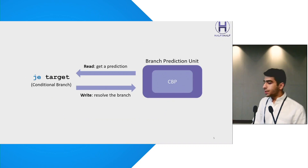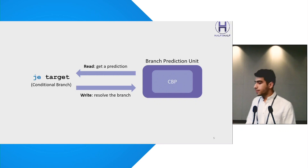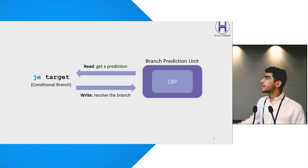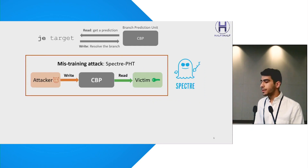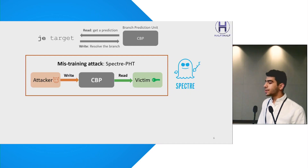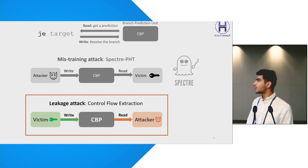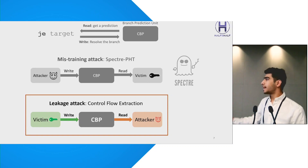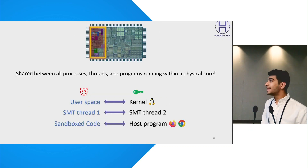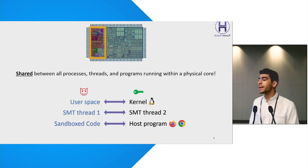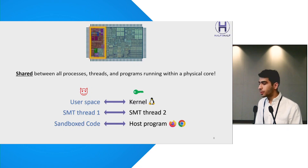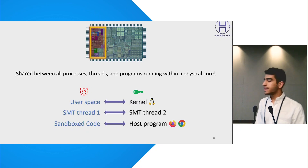We can think of the branch predictor as a structure that can be both read from and written to. When a branch gets predicted, it's like performing a read operation, and when the branch is resolved, it updates the branch predictor state like a write operation. In a mistraining attack like Spectre PhD, the attacker manipulates the branch predictor state, causing the victim to get mispredicted, enabling potential security breaches. In leakage attacks like control flow extraction, the victim's writes to the branch predictor can be exploited by the attacker to extract sensitive information.